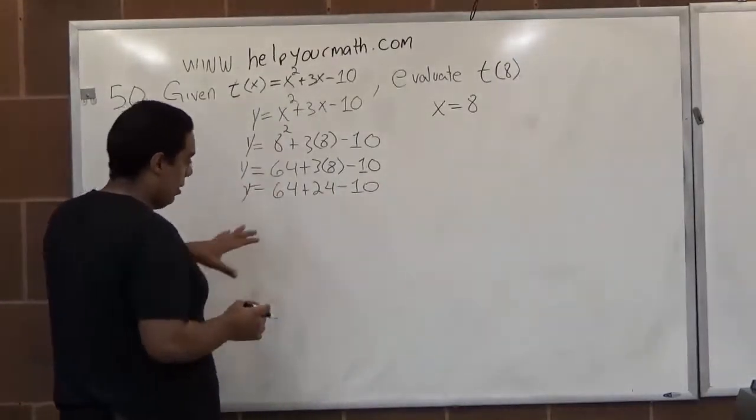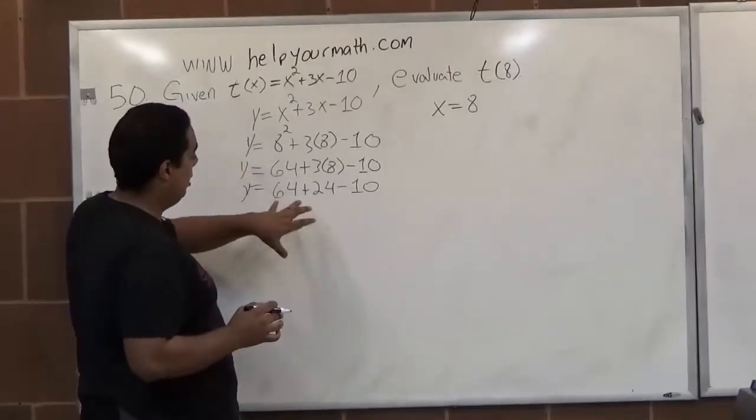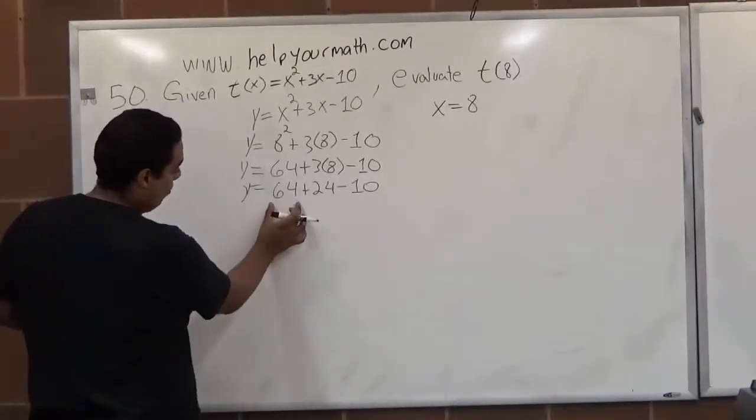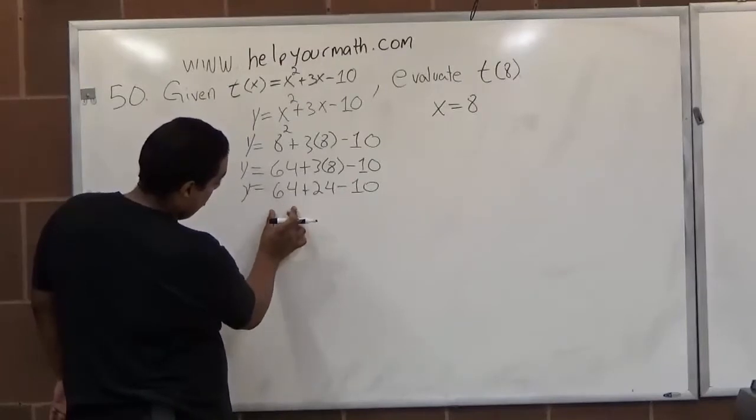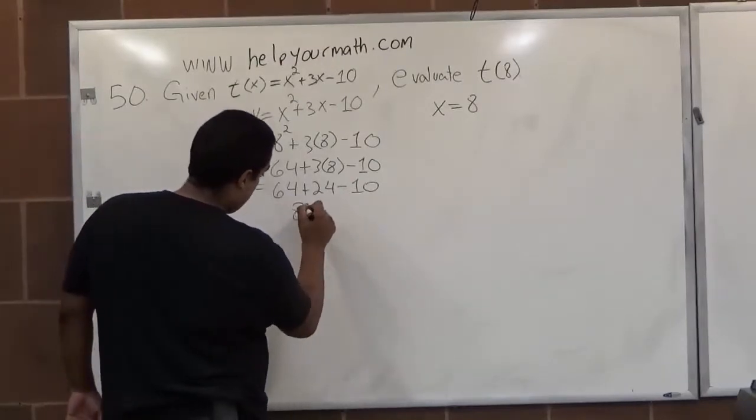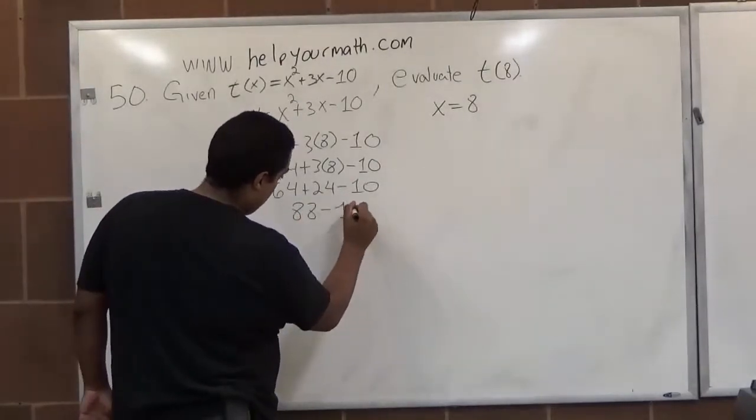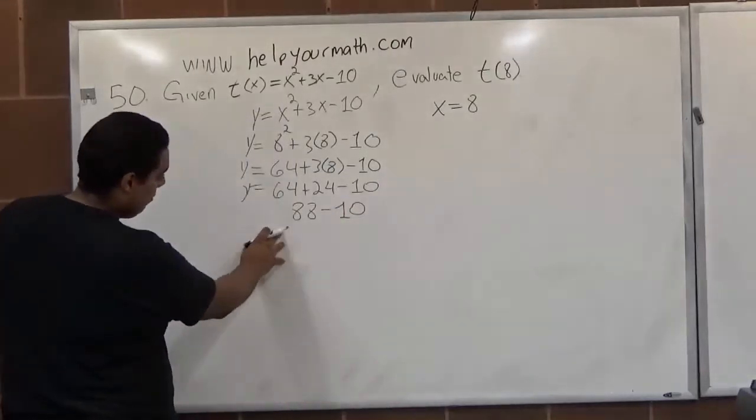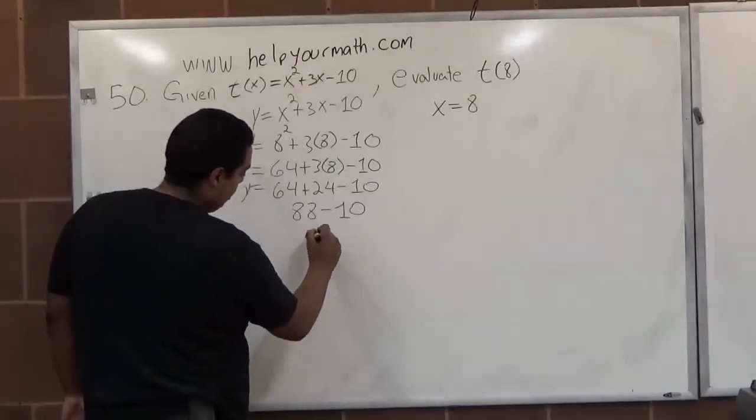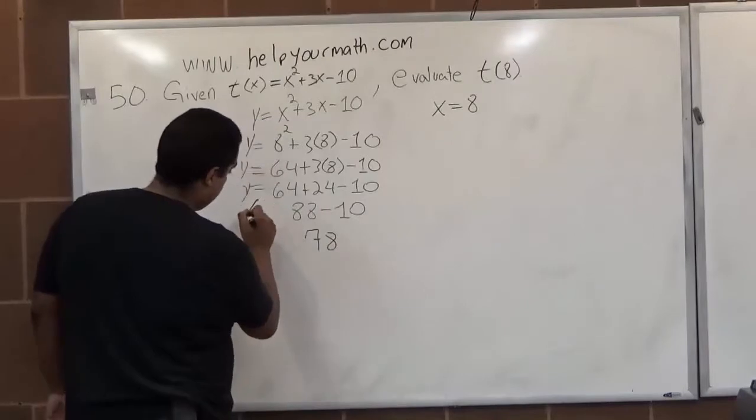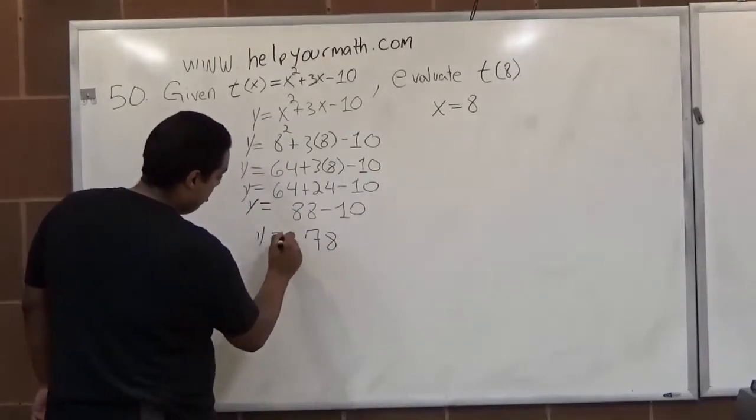Now we're tackling addition and subtraction. 64 plus 24 is equal to 88 minus 10. 88 minus 10 is 78, so y equals 78.